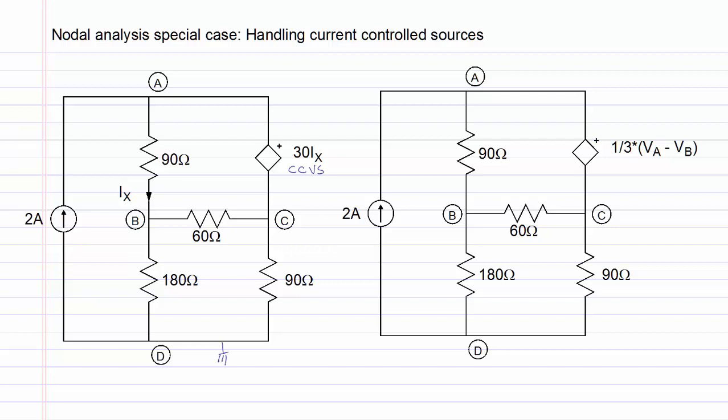Notice that the current IX is the same as the current flowing through the 90-ohm resistor. If we follow the passive sign convention for this resistor and current direction, the polarity of the voltages will be as shown. We can write IX using Ohm's law as equal to VA minus VB divided by 90 ohms.